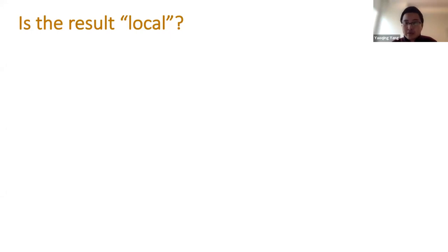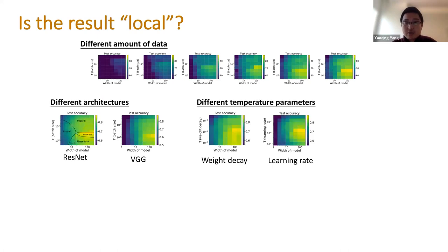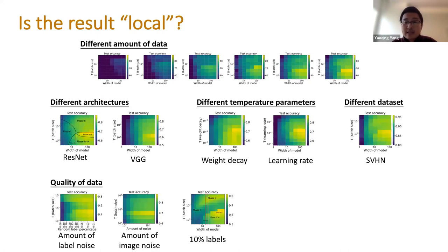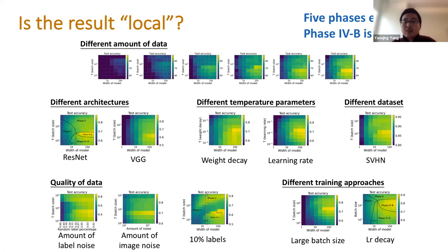To check that our result is not cherry-picked, we looked at many phase plots across different amounts of data, different architectures, different temperature parameters, different datasets and data quality, and different training approaches. In all of these results our conclusions hold: the five phases exist and one can always get the best test accuracy in Phase 4b. We looked at so many phase plots to build a general framework rather than restrict to a local picture.